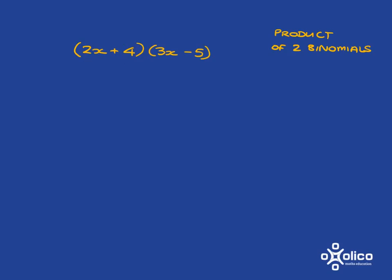A binomial has two terms. This is a binomial because it's got two terms, this is a binomial because it's got two terms, and we're multiplying them together. So we've got a product of two binomials.